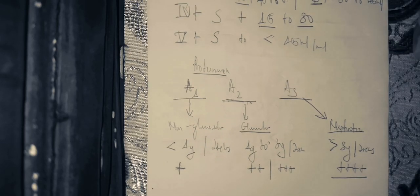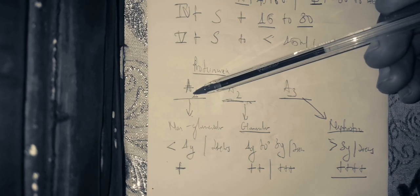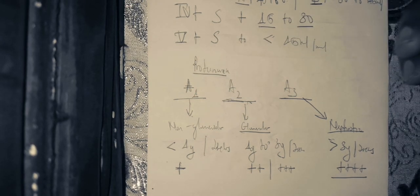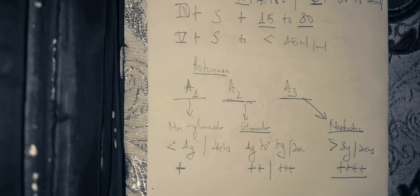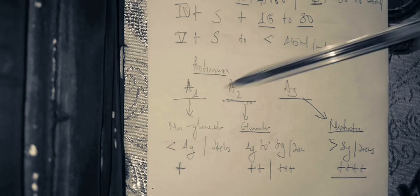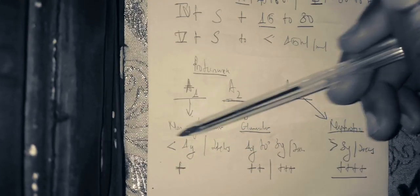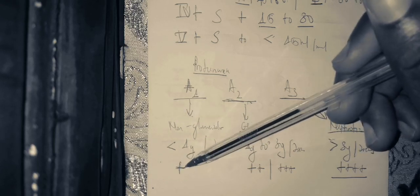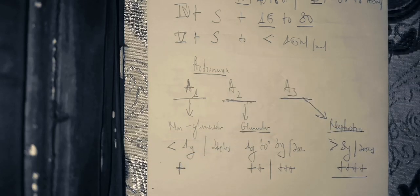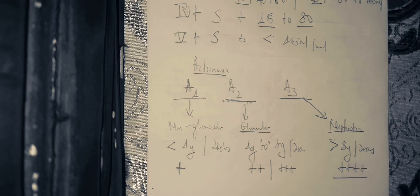For example, CKD Stage 1A1 means a structural abnormality without any functional abnormality — the glomerular filtration rate is greater than 90 mls per minute per 1.73 m² — combined with non-glomerular proteinuria, meaning less than 1 gram in a 24-hour urine sample or a 1 plus on the urine dipstick.